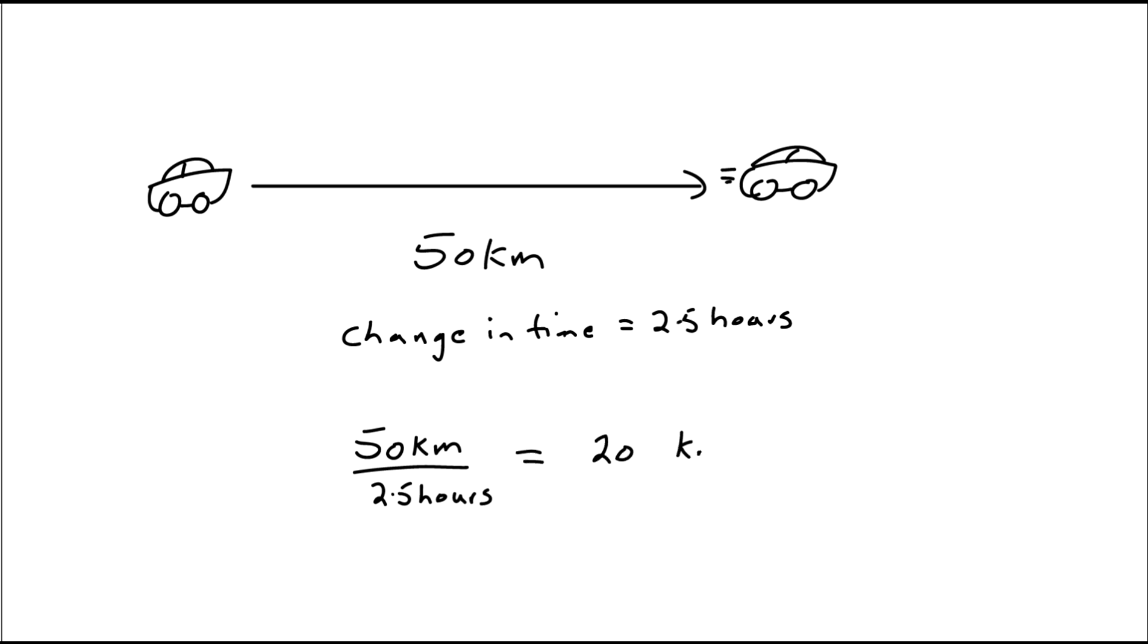So let's look at another example. Say that it took 2.5 hours to drive the 50 kilometers. So the change in time was 2.5 hours. We divide 50 kilometers by 2.5 hours to give us 20 kilometers per hour.